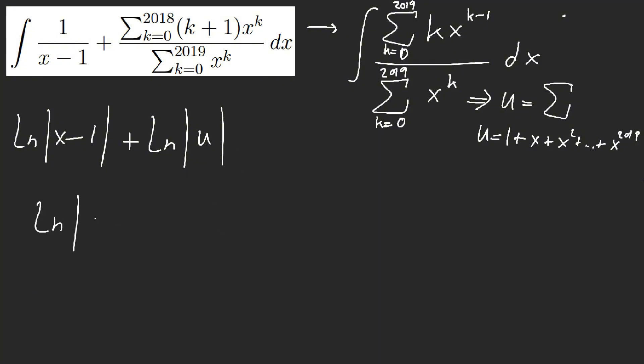We have ln x minus one plus ln of one plus x plus up to x to the power of 2019. The ellipses, don't ever leave your answer like this because that's dangerous. You will get eliminated. This is not acceptable. You can't have ellipses in your answers. So, but what we can do.